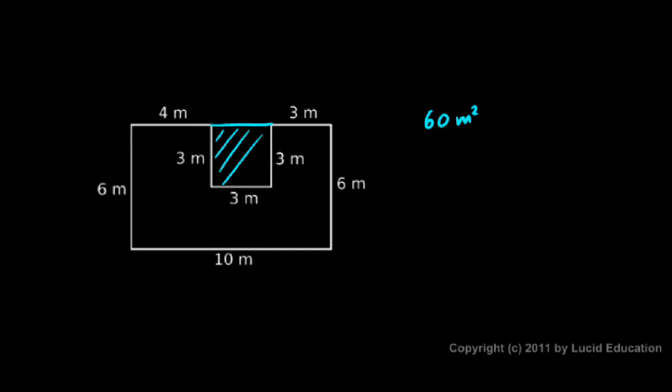And then let's take out this chunk right here. You can see that's 3 meters by 3 meters. That's a square. And so the area there will be 9 square meters. So 60 square meters minus 9 square meters. And I can do that in my head. I get 51 square meters.